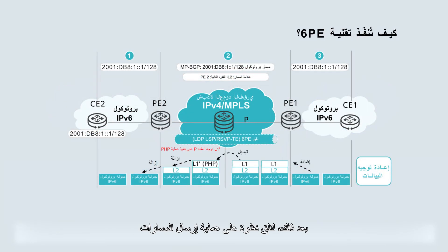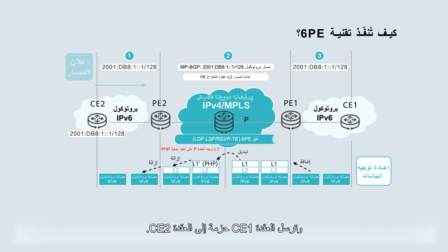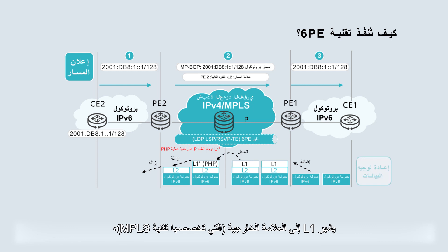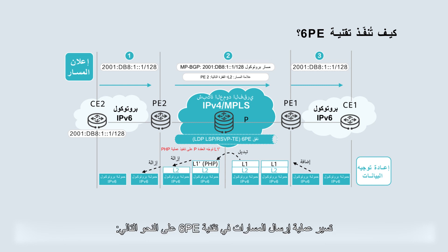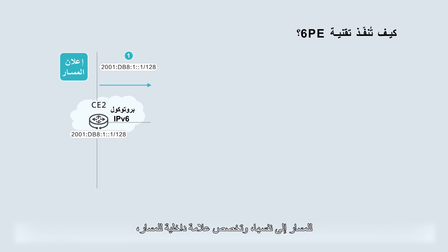Next, let's look at the 6PE route transmission and packet forwarding process. As shown in the figure, CE2 sends a route to CE1, and CE1 sends a packet to CE2. L1 indicates an outer label allocated by MPLS, and L2 indicates an inner label allocated by BGP. The 6PE route transmission process is as follows. Step 1: CE2 sends an intra-AS IPv6 route to PE2. Step 2: upon receipt, PE2 changes the next hop of the route to itself, allocates an inner label to the route, and sends the labeled IPv6 route to its peer PE1.